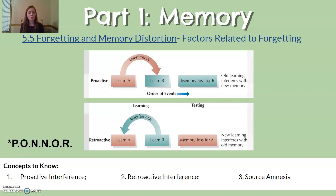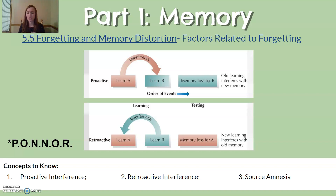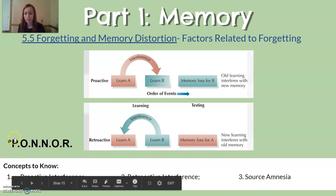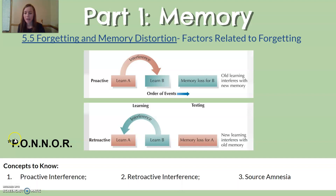Retroactive interference is when new memories interfere with your ability to recall something from longer ago. For example, your teacher asks you to remember something from last semester but all you can think of is what you're learning right now. There's an acronym to help remember this: PONR. Proactive is when old information interferes with new information; retroactive is when new information interferes with old information.